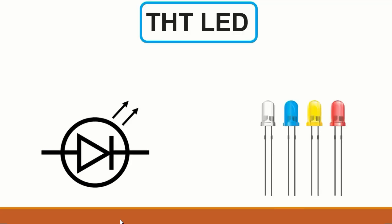Then we have LEDs. We already saw LEDs in the previous part. Here we have other LEDs — these are basically diodes. You can test them using the same working principle as a normal diode, but we call these THT LEDs. They have terminals, and the symbol is the same as a diode but with a circle and two arrows indicating emitting light.